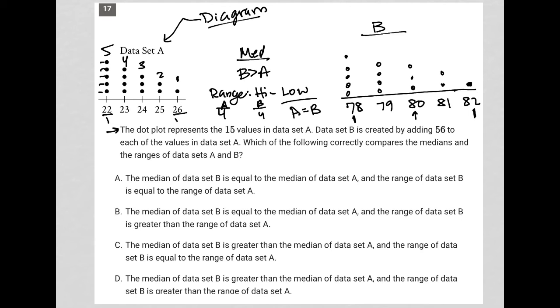So that's what we care about. We want A to equal B for range. We want B to be greater than A for the median. So choice A says the median of data set B is equal to, definitely not. Choice B says the median of data set B is equal, definitely not. Choice C, the median of data set B is greater than the median of data set A. Yes. And the range of data set B is equal to the range of data set A. Absolutely yes. So our answer here is choice C.